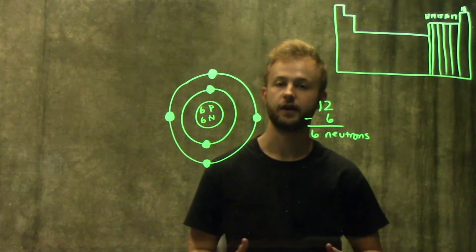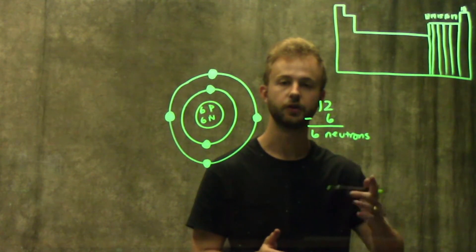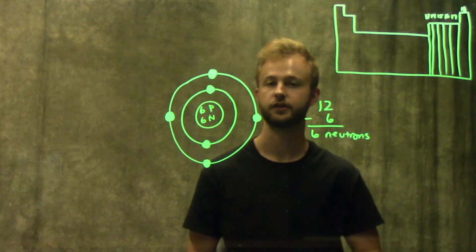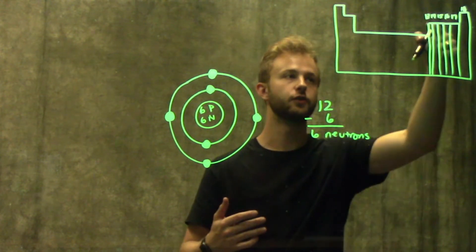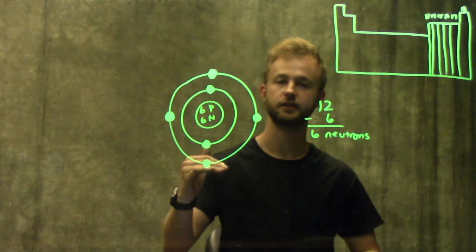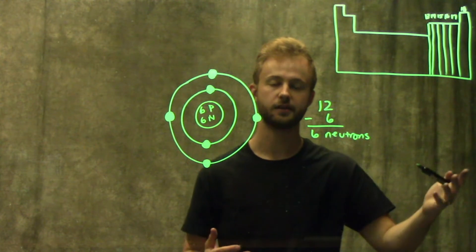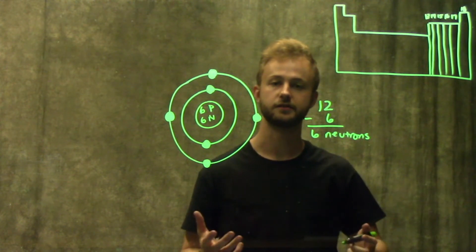Carbon is found in column 14. If you look at the second number of the column number, that tells you how many valence electrons that atom has. For carbon in column 14, the second number is four, and we have four valence electrons. For chlorine, that's in column 17. The second number is seven, so we have seven valence electrons.